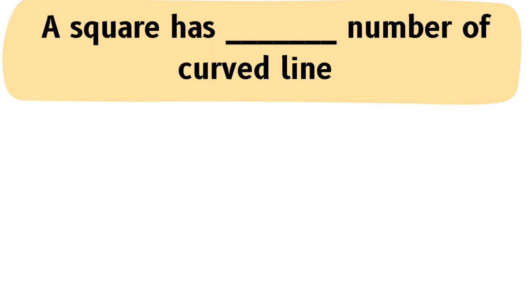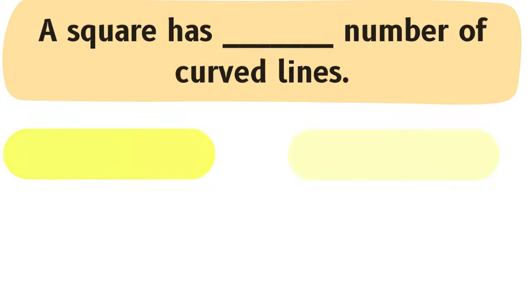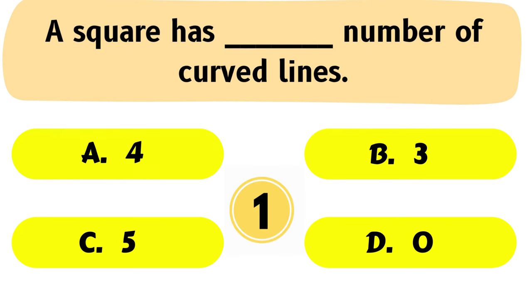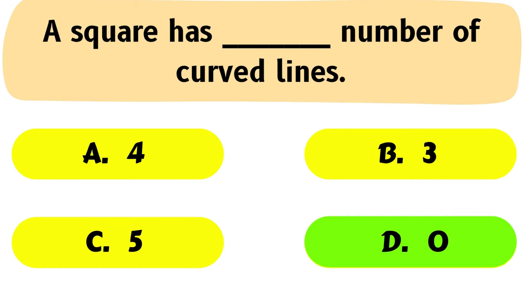Question No. 27: A square has ___ number of curved lines. A. 4, B. 3, C. 5, D. 0. The correct answer is Option D: 0.